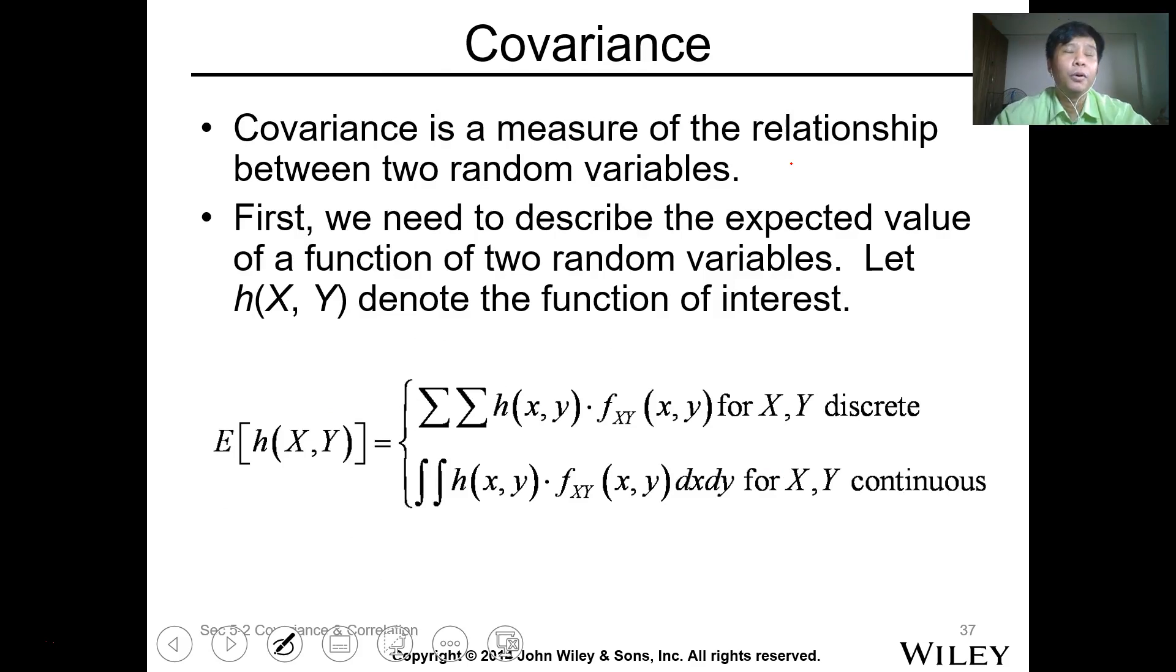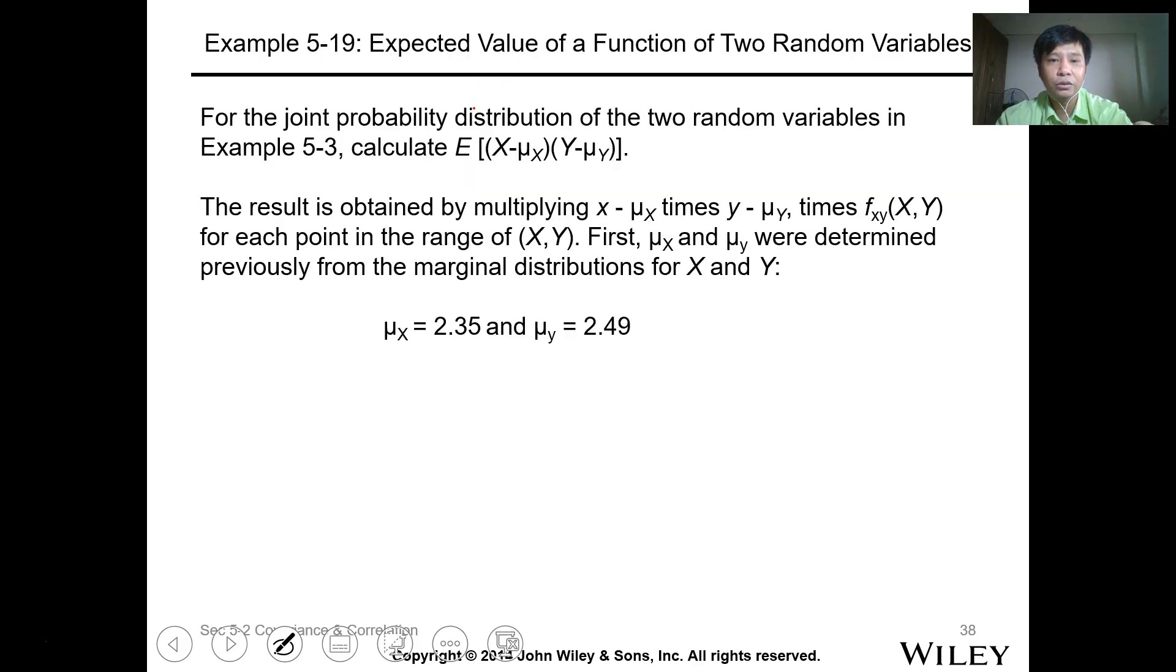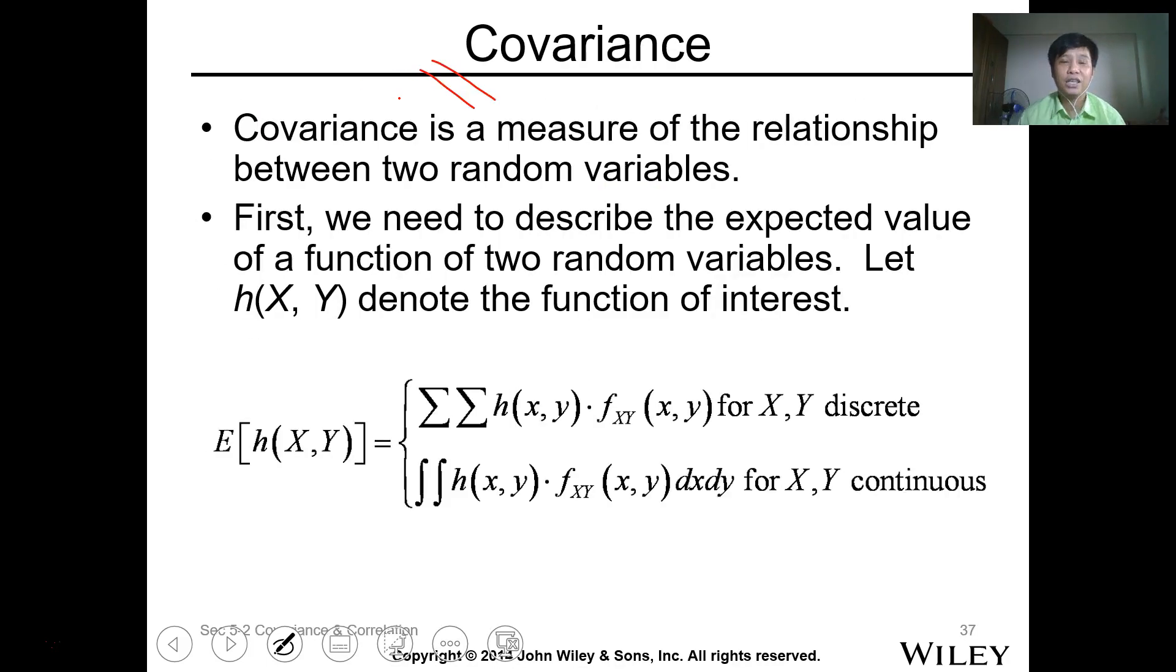For joint probability, two parameters we usually want to determine are covariance and correlation. For covariance, it's basically the expected value of h(x,y), which is the summation of h(x,y) times your f(x,y) for all values of x,y. Same with integration - multiply h(x,y) with f(x,y) and integrate for dx and dy. First, we need to describe the expected value, which is h(x).